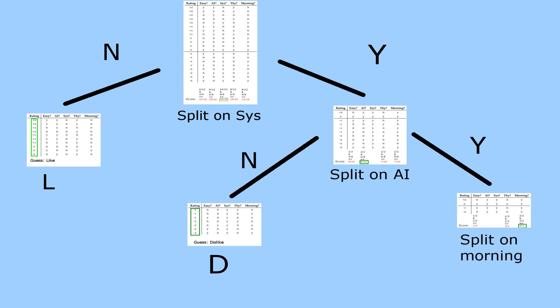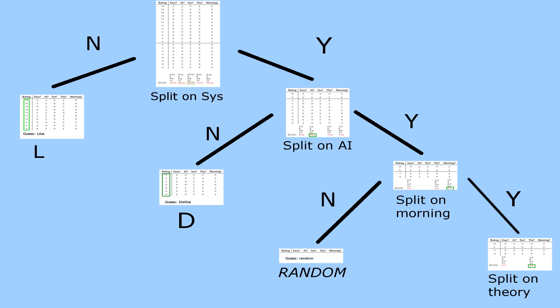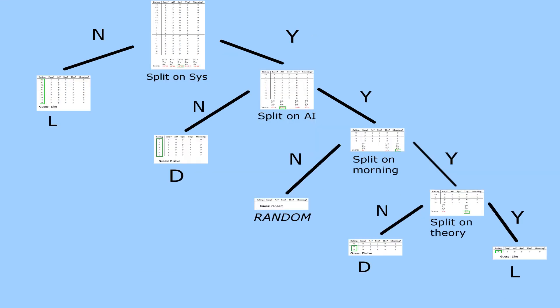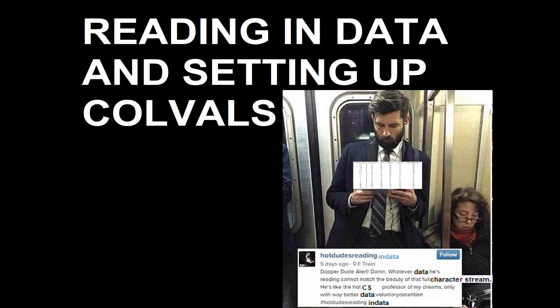All students who said no to this being an AI class get partitioned to the left, and the others go right. The left dataset has a unanimous answer — everyone dislikes the class. AI truly is the most popular class right now. We do another split on the right child; this time morning gets the highest score. We run out of data for the no partition, so we just guess from all possible labels. One more split on theory and we've hit our true base case — we guess the majority label and we're done building our tree.